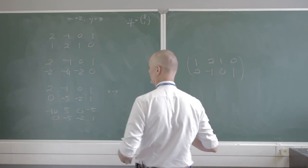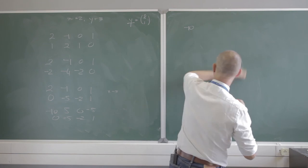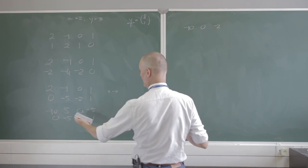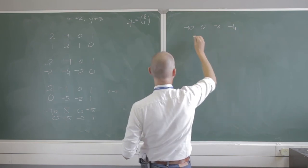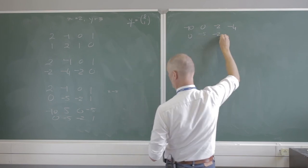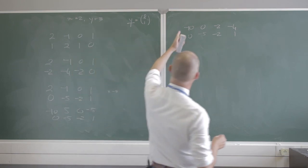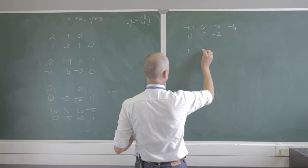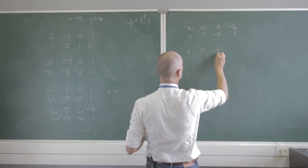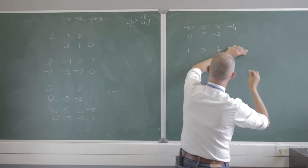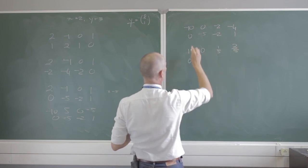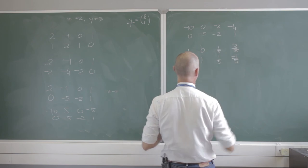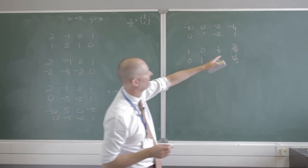So now I have negative 10, 0, negative 2, negative 4 in the first row and 0, negative 5, negative 2, 1 in the second. Multiplying the first row throughout by 1 over negative 10 gives 1, 0, one-fifth, two-fifths. Multiplying the second row by 1 over negative 5 gives 0, 1, two-fifths, negative one-fifth. And lo and behold, on the left-hand side I now have an identity matrix, and on the right-hand side I have A inverse.